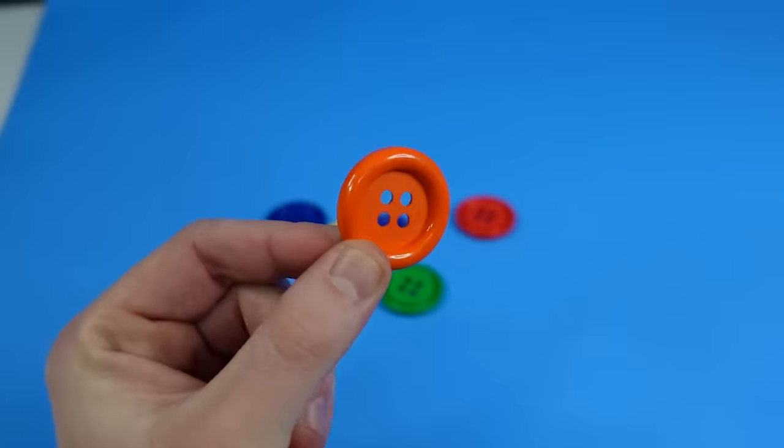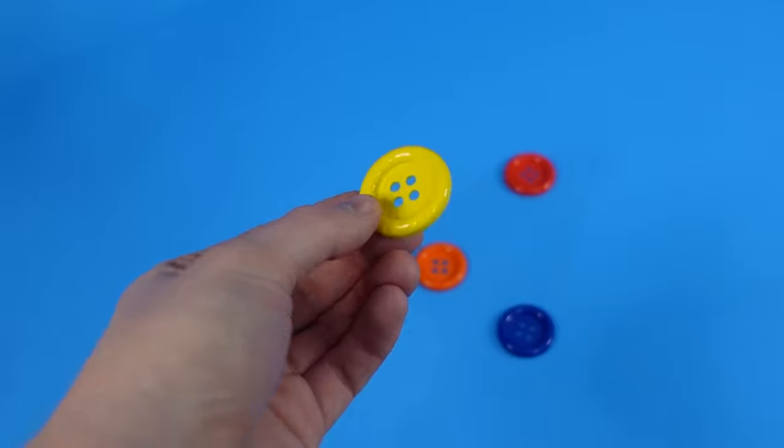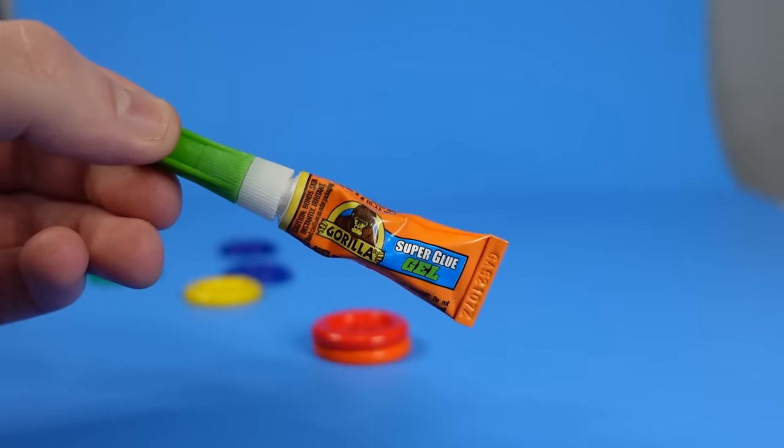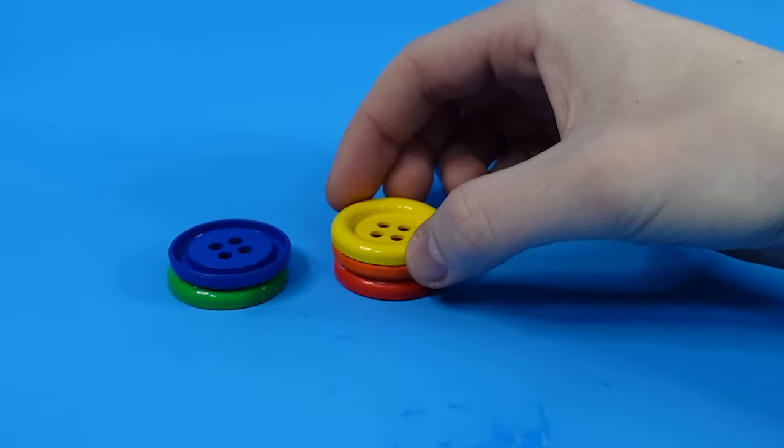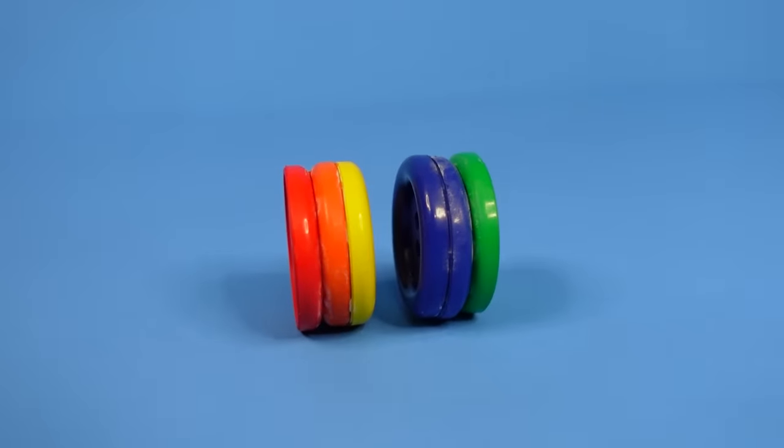Originally, my plan was to use one button for each half of the yo-yo. However, these buttons are way too light. So using some gorilla glue, I attached the extra buttons to each other to add more weight. And now we've got two halves of a yo-yo.